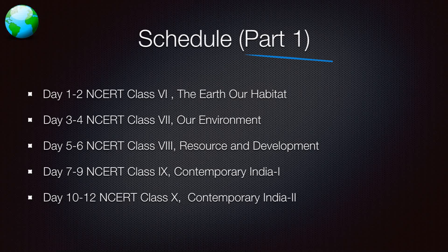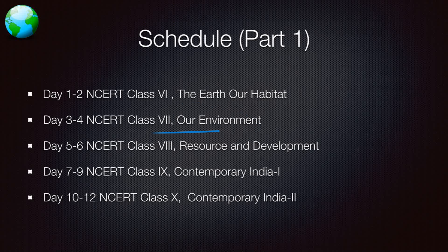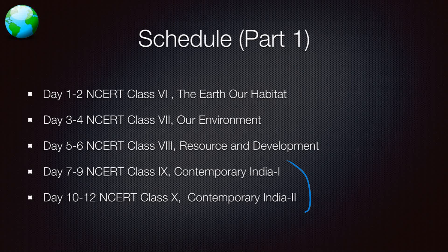So what should be our schedule? Part one covers the first two weeks. Start with NCERTs: for example, Class 6 NCERT 'The Earth — Our Habitat' — give one to two days to it. Read maps on the side. Day three to four: Class 7 NCERT 'Our Environment.' Keep reading maps, The Hindu, and Yojana alongside. Day five to six: Class 8 NCERT 'Resources and Development.' These three NCERTs should be over in the first six days.